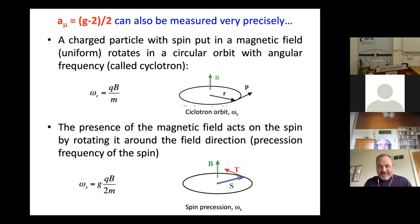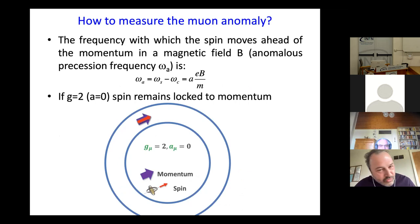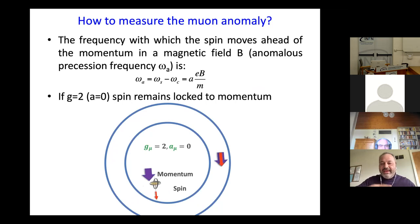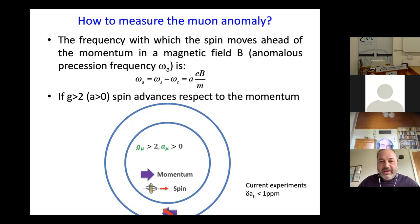How do we measure the muon anomaly so precisely? The muon anomaly is given by the difference of two frequencies: the spin precession frequency and the cyclotron frequency. This difference — the anomalous precession frequency omega_a — is tied to the magnetic field through the muon anomaly a. If g equals two, a equals zero, and the spin and momentum are aligned and stay aligned in the orbit. But if a is greater than zero, the spin starts to rotate relative to the momentum — and the anomalous precession frequency is the rate at which the spin advances with respect to the momentum.